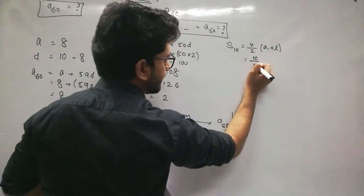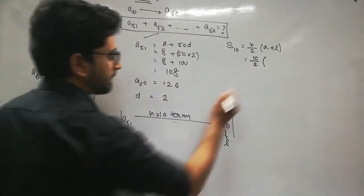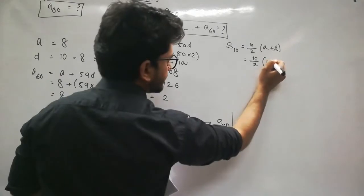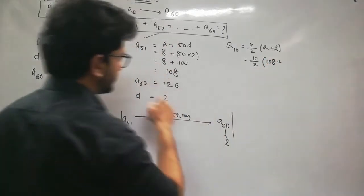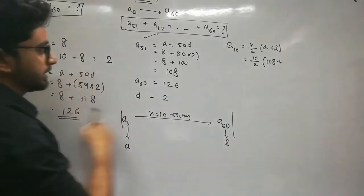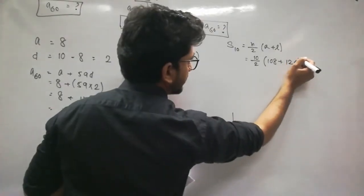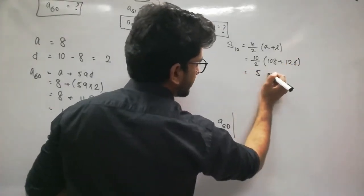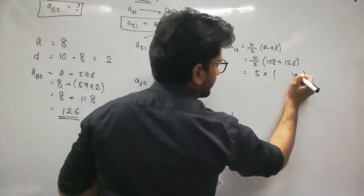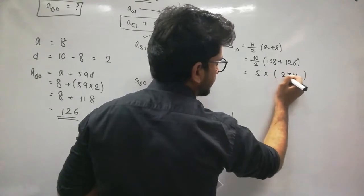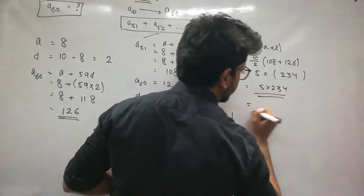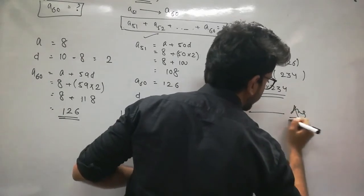n = 10, so sum = 10/2 × (first term + last term) = 5 × (A51 + A60) = 5 × (108 + 126) = 5 × 234 = 1170. So the sum of the last 10 terms is 1170.